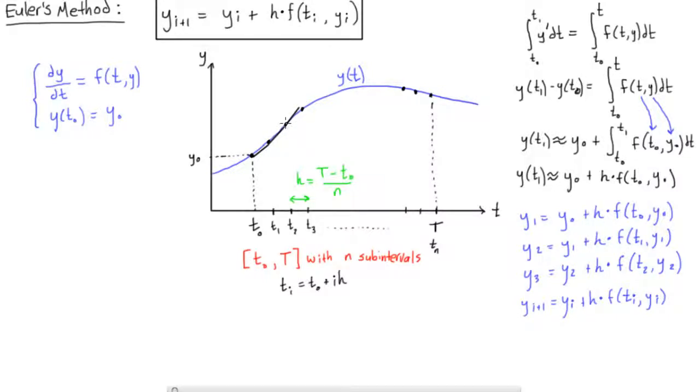And again, we just keep repeating this process of calculating the slope from this line, and going out a distance of h, and then trying again. And obviously, the more intervals we have, the more accurate or the closer this will actually be to the true solution.